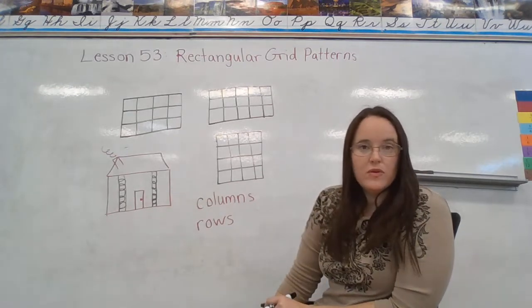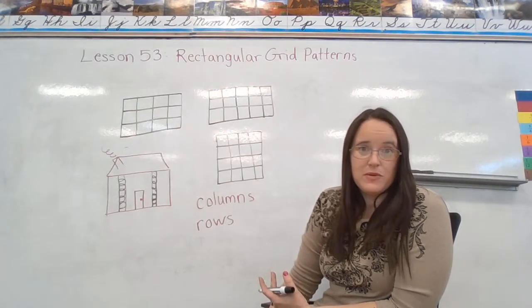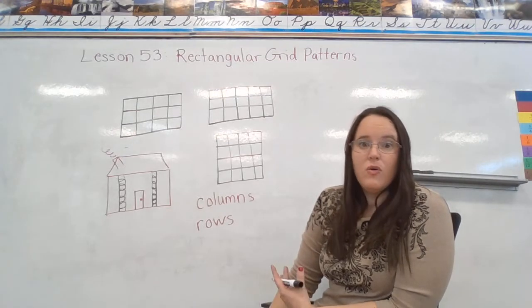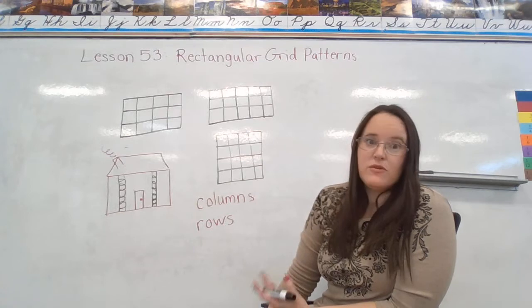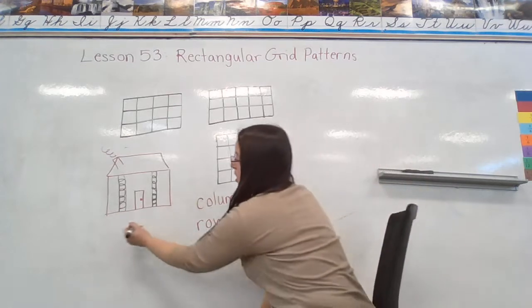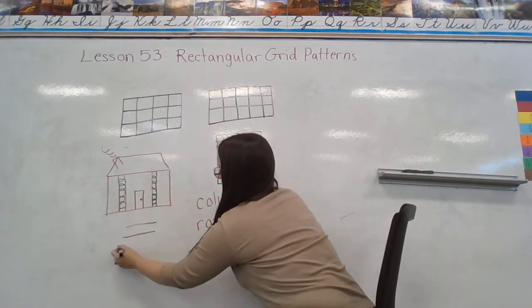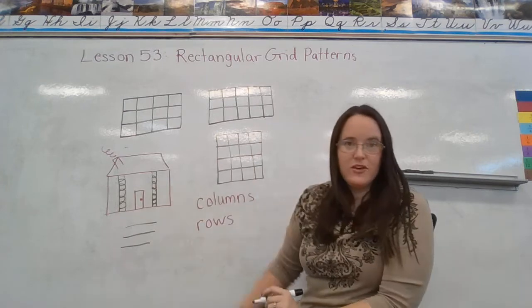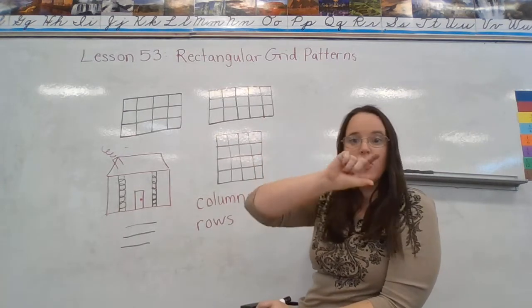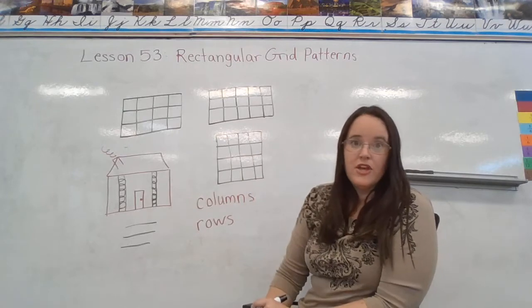Rows are often times what we sit in when we're at the movie theater, or if we're going to see a play, or sometimes in school. Rows are horizontal and they go like this. So columns up and down, rows back and forth.